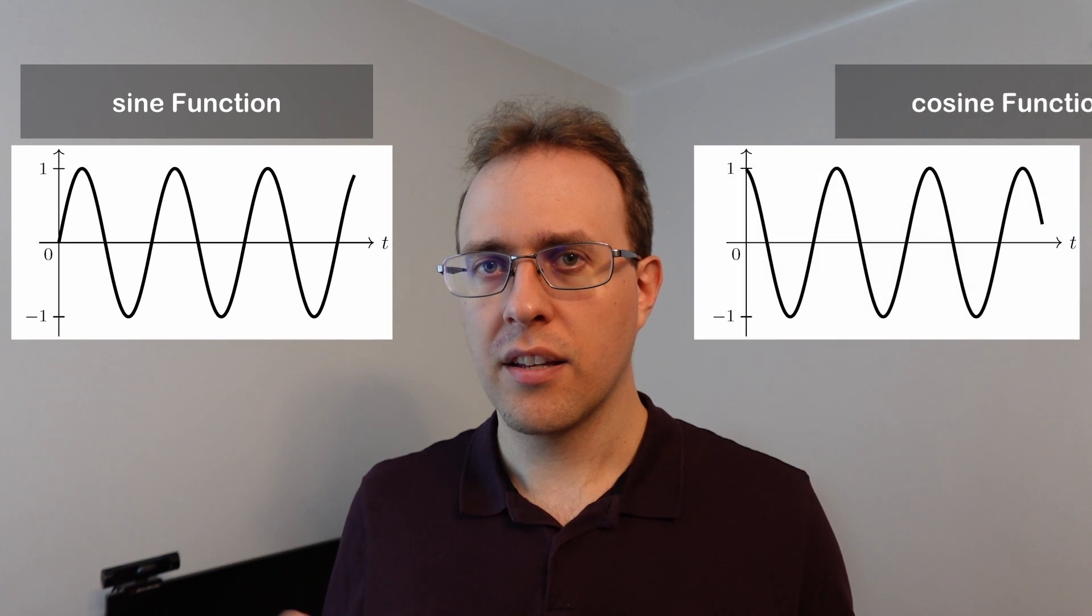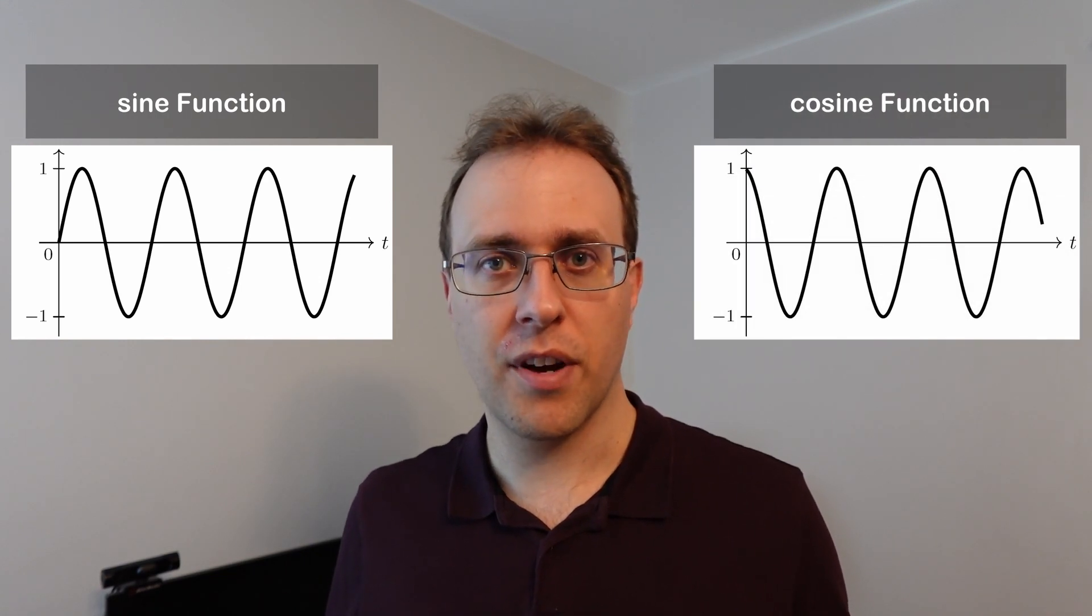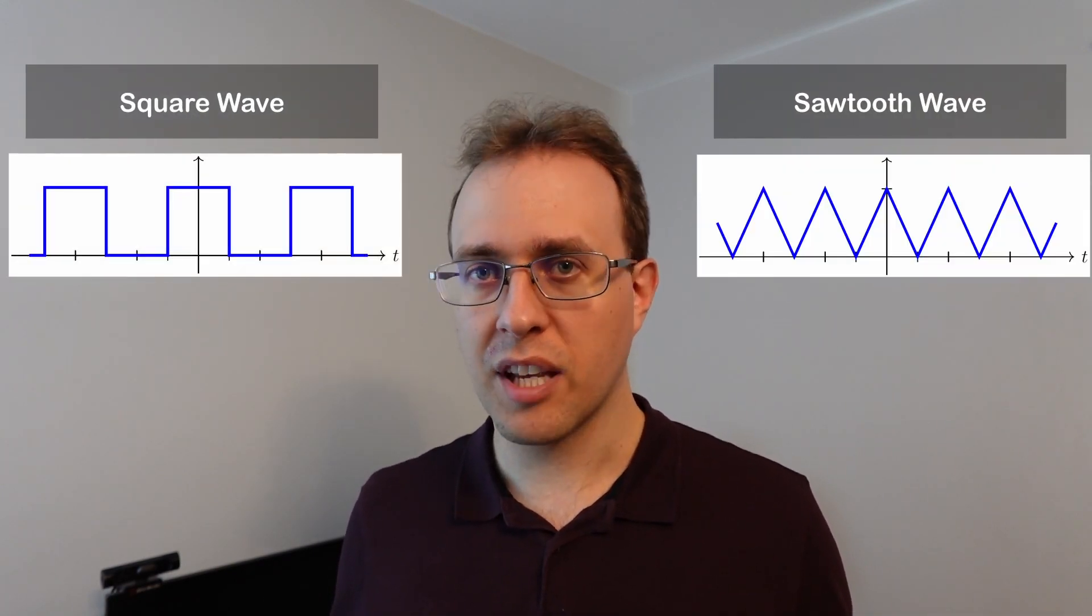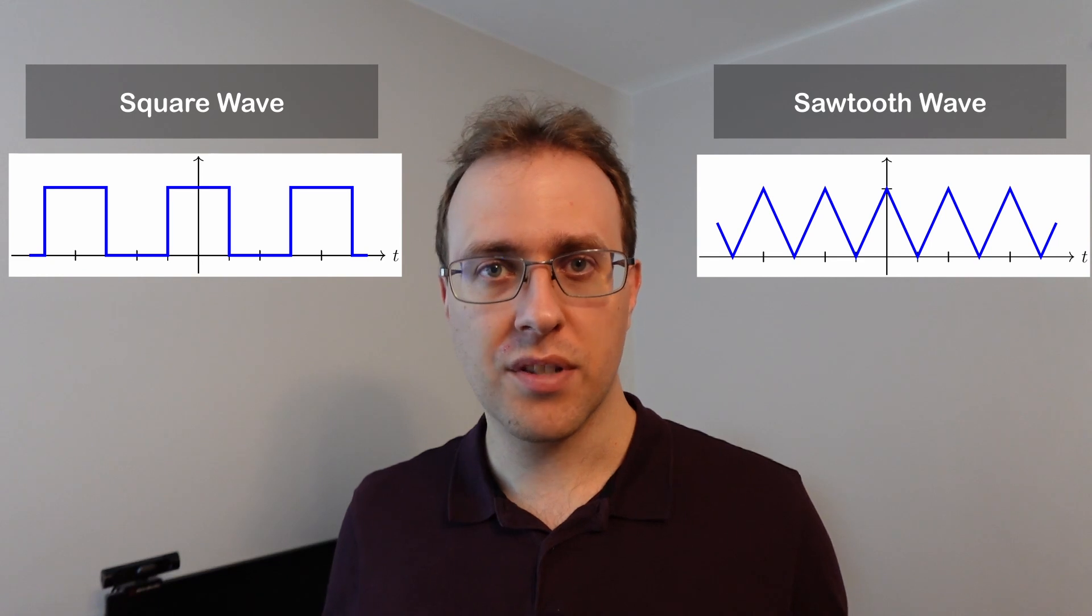When we think of periodic signals, we usually think about signals like sines and cosines, so trigonometric functions that have a single frequency. Some periodic signals look really simple, but they're actually made up of multiple frequency components, like a periodic square wave or a sawtooth wave.